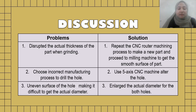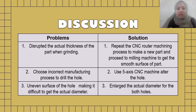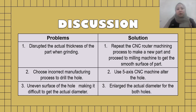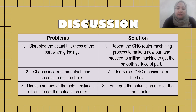One issue is that we used a grinding machine to grind the part and disrupted the actual thickness in order to get a flat and smooth surface. This occurred because while designing the part in CATIA, we should have increased the thickness of the part to avoid this problem. After the CNC router machining process, we could remove the unwanted wood block using the bandsaw machine, then use the milling machine to achieve the actual thickness. For this project, we had to repeat the CNC router machining process to produce a new part.